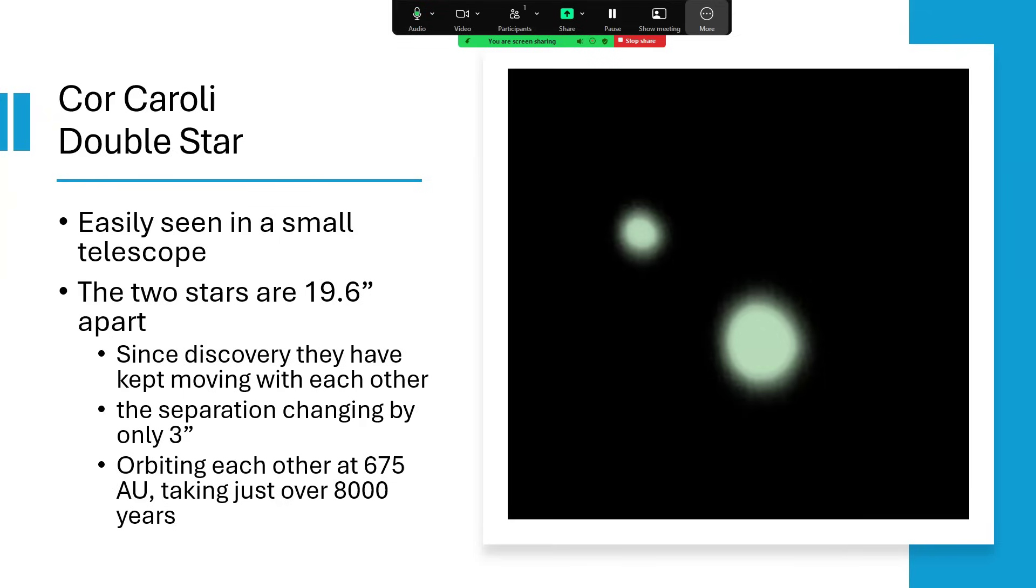One orbit at a distance of 675 astronomical units, so 675 times the Earth-Sun distance, around about 20 times the distance of the Kuiper Belt comparing it to our solar system. Quite a wide orbit indeed. Because of that orbit, we can calculate the mass from Kepler's laws and work out what the total mass of the system must be, then estimate how it's split between them.